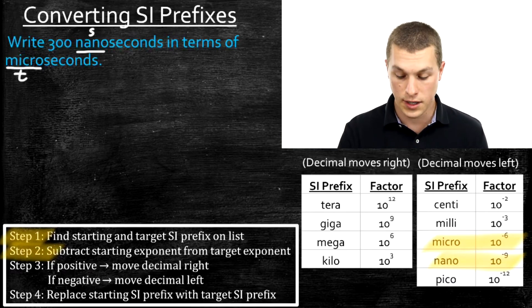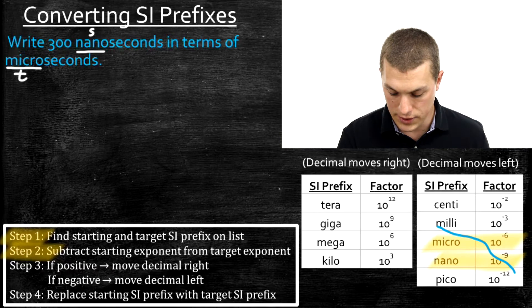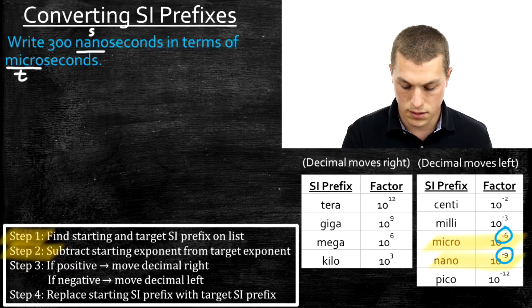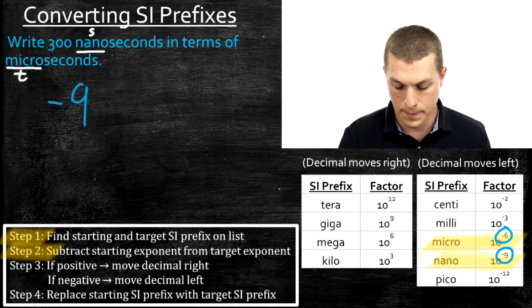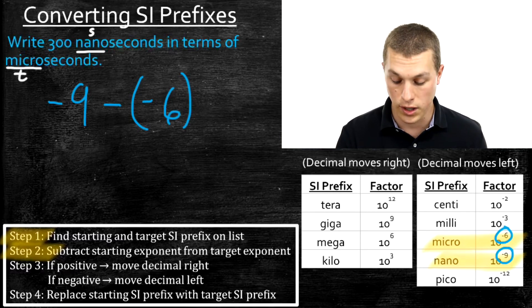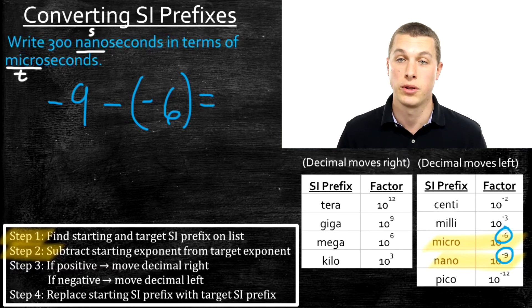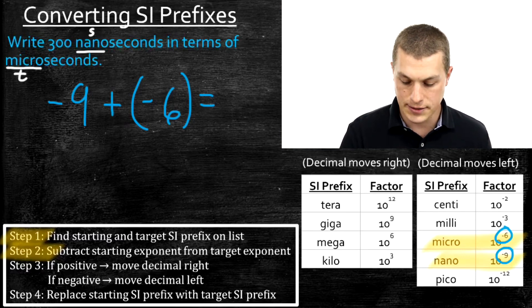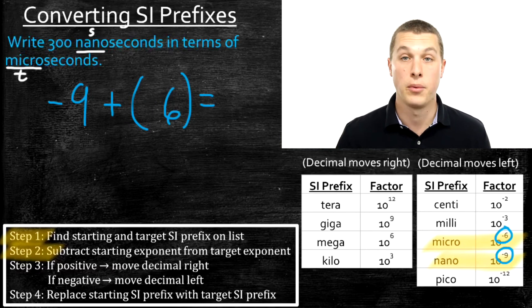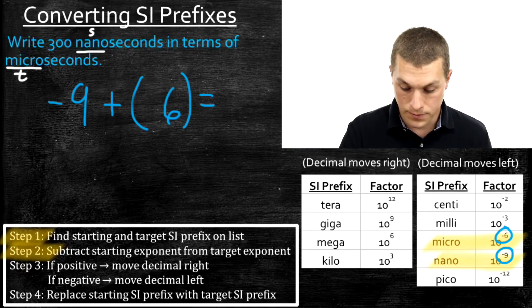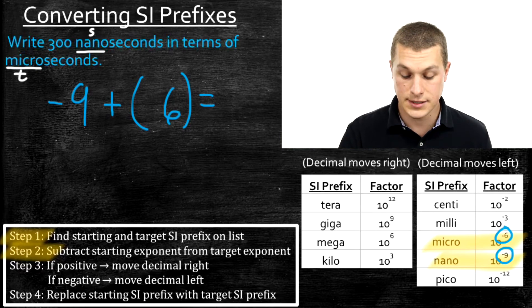Step two: subtract the starting exponent from the target exponent. The starting exponent is minus 9 and our target is minus 6. We write minus 9 minus, and I'll use parentheses — you should always use parentheses in the subtraction process if you have a negative exponent. When you subtract a negative, it's the same as adding. So minus 9 plus 6 gives us minus 3.